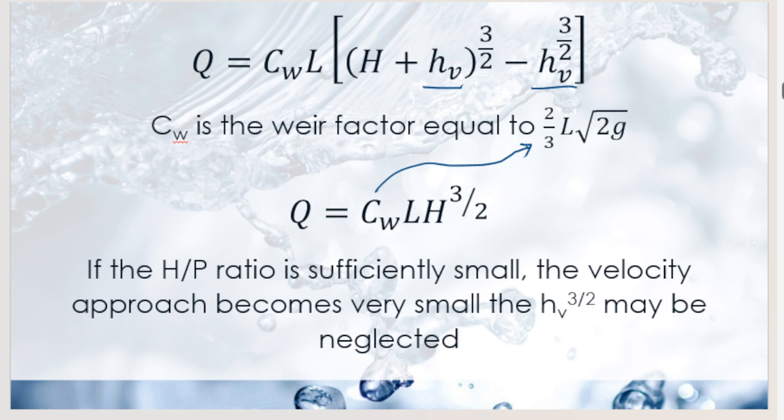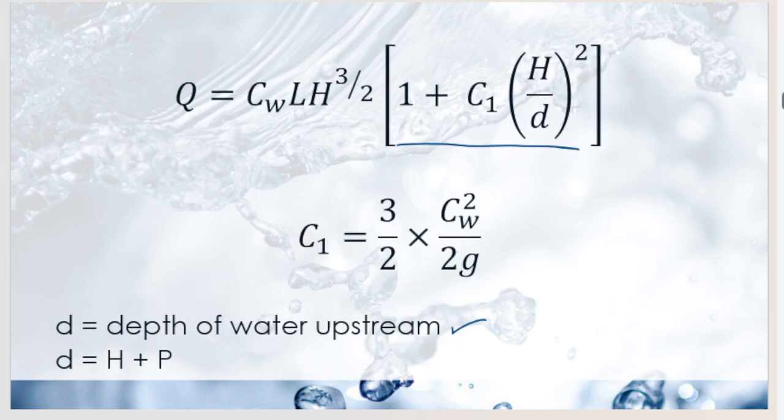In this formula, A-sub-s is the constant water surface area, H1 is the initial head, H2 is the final head, C-sub-w is the weir factor, and L is the crest length. Now let's move on to sample problems — we'll continue on Microsoft Whiteboard.